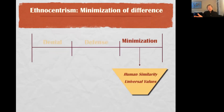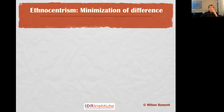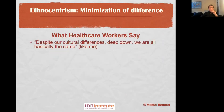When we move into minimization, we're talking about human similarities — everybody's got two arms, two legs, easy in a healthcare context — but also the idea of universal values, that there are some basic things all of us share as human beings that make us human. What people say at this point is: 'Despite our differences, deep down we're all basically the same' — like me. Nobody ever says 'we're all the same, like her' — it's always 'like me.' So there's a kind of projection of this universal reality going on, but at least it's being attributed to others as opposed to seeing others as simpler than yourself.